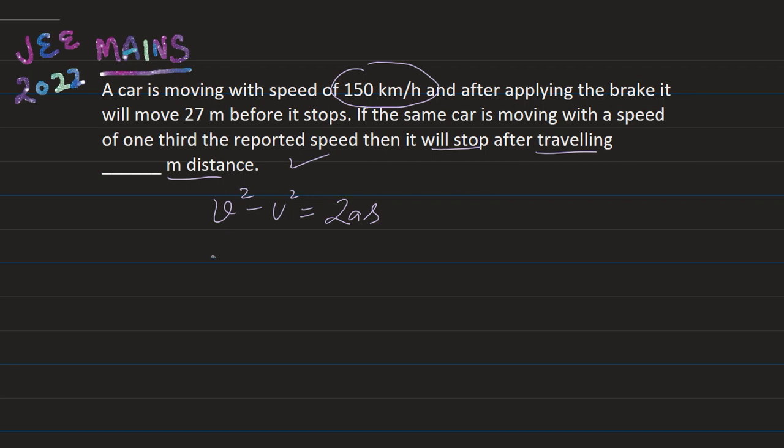Finally the car will stop, so the final velocity is 0. So it is 0² minus initial speed of 150 km per hour squared. I have not converted the units because when we make two cases, the units will cancel. It will not need to be converted to the SI system. So equals 2a times 27 meters. Let's suppose this relation is equation 1.